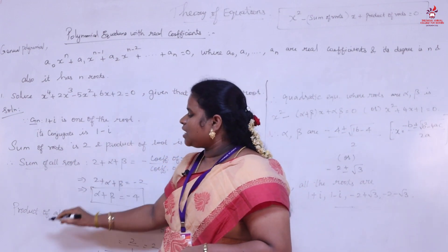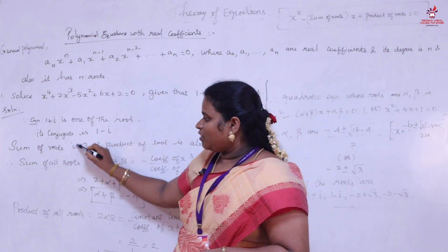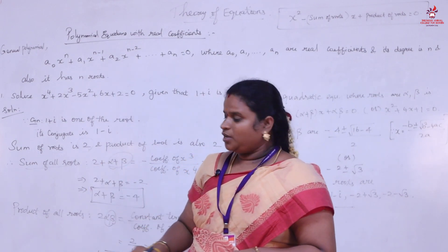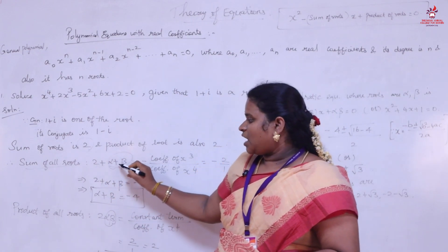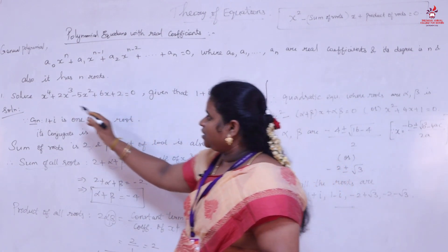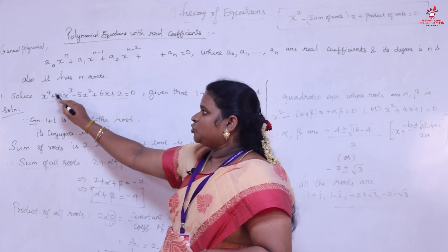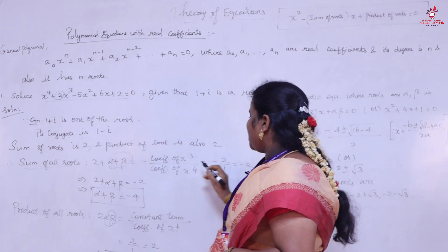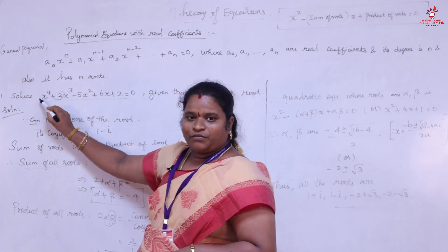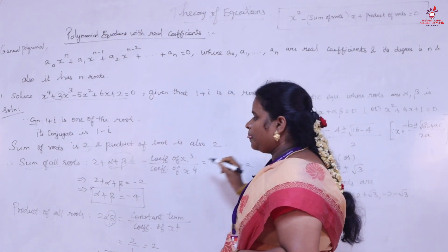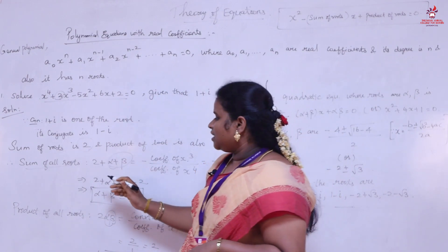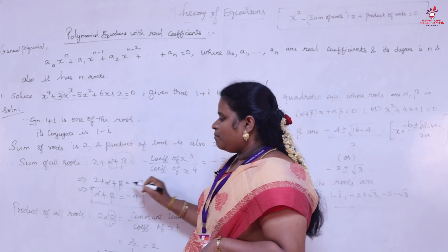Next, we find the sum of all roots. We know the sum of the two complex roots is 2, and α + β represents the sum of the remaining two roots. So: 2 + α + β = −(coefficient of x³) / (coefficient of x⁴) = −2/1 = −2. Therefore, α + β = −2 − 2 = −4.